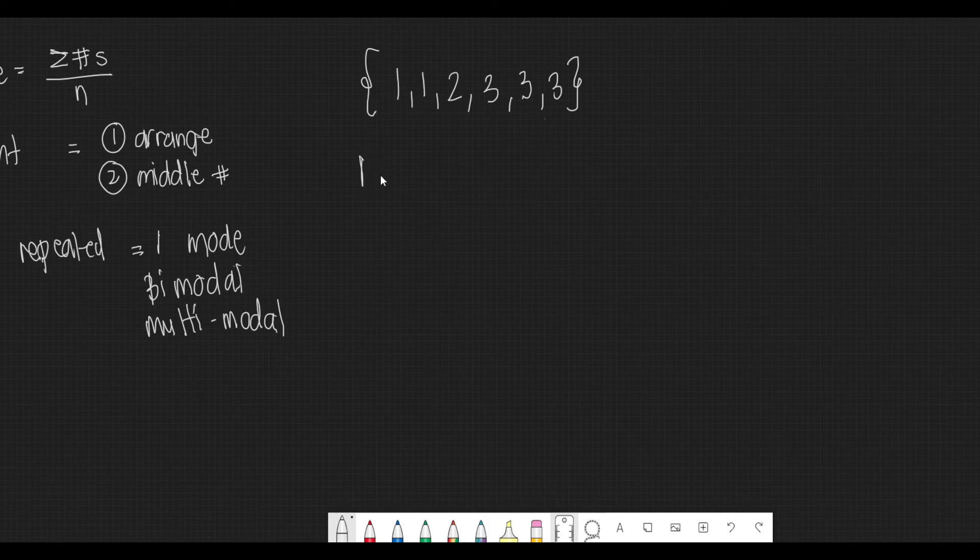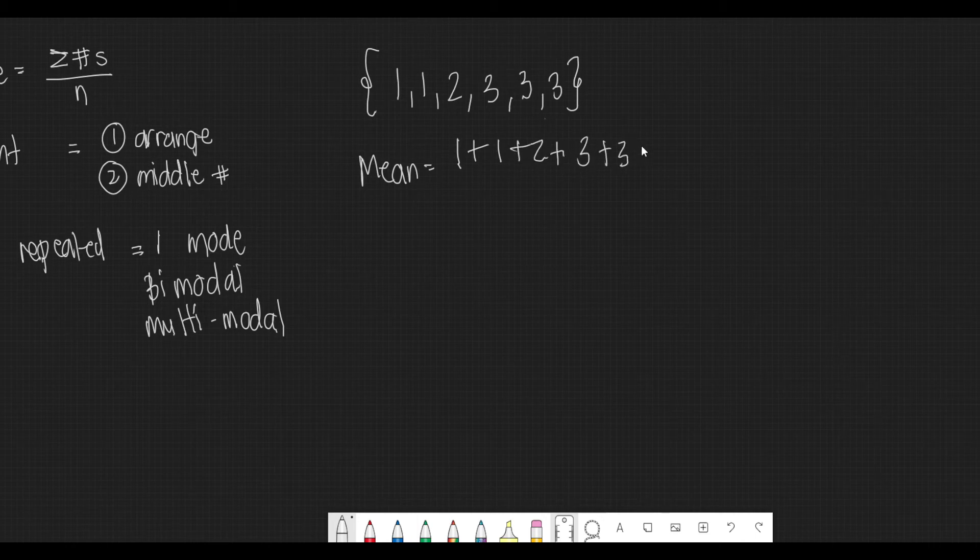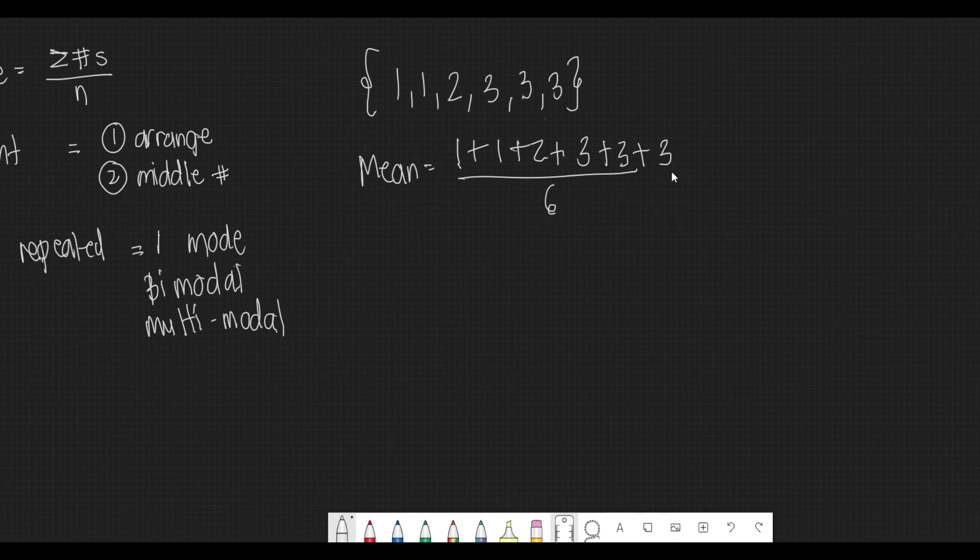So the mean for this would be the summation of all these numbers. So it's 1 plus 1 plus 2 plus 3 plus 3 plus 3 divided by 1, 2, 3, 4, 5, 6. So there are 6 numbers, that would be divided by 6.